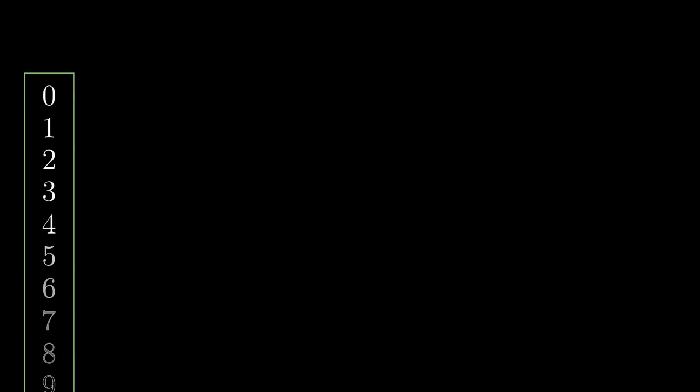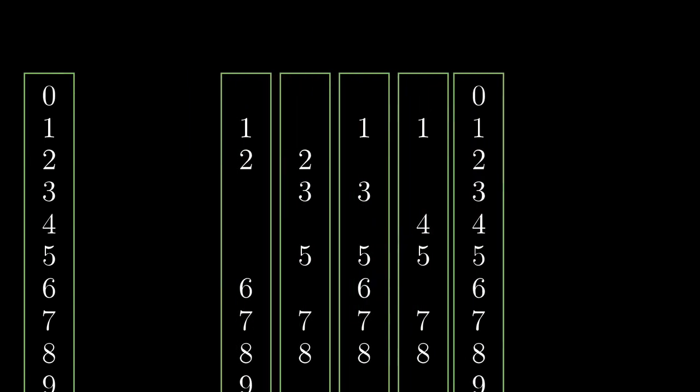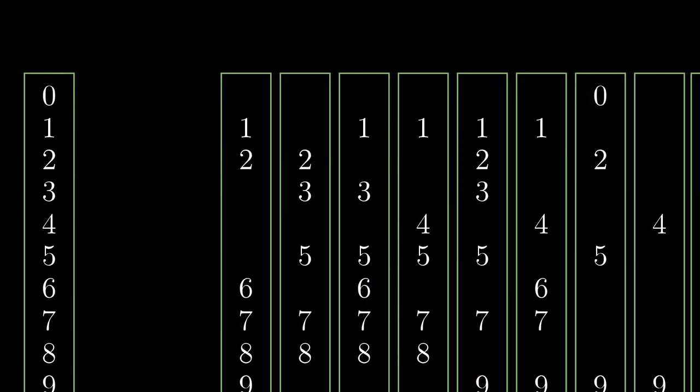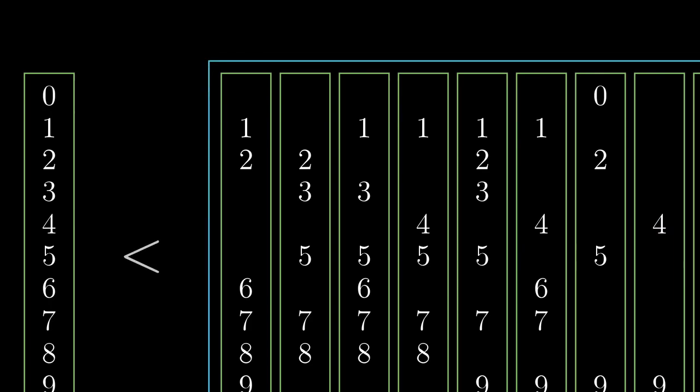In the previous chapters we have seen that when we take the set of all the natural numbers, take all the possible subsets of it and pack them into a new set, we get a set strictly bigger than the set of all the natural numbers itself.